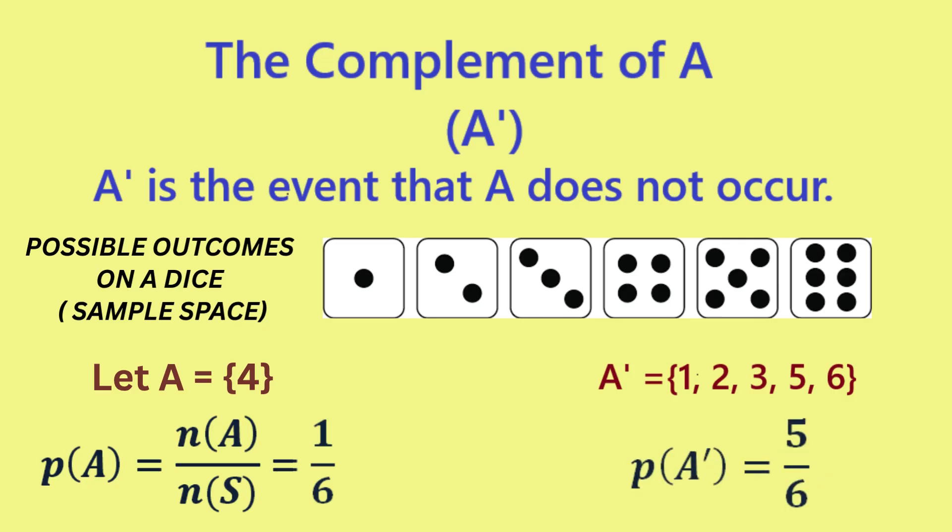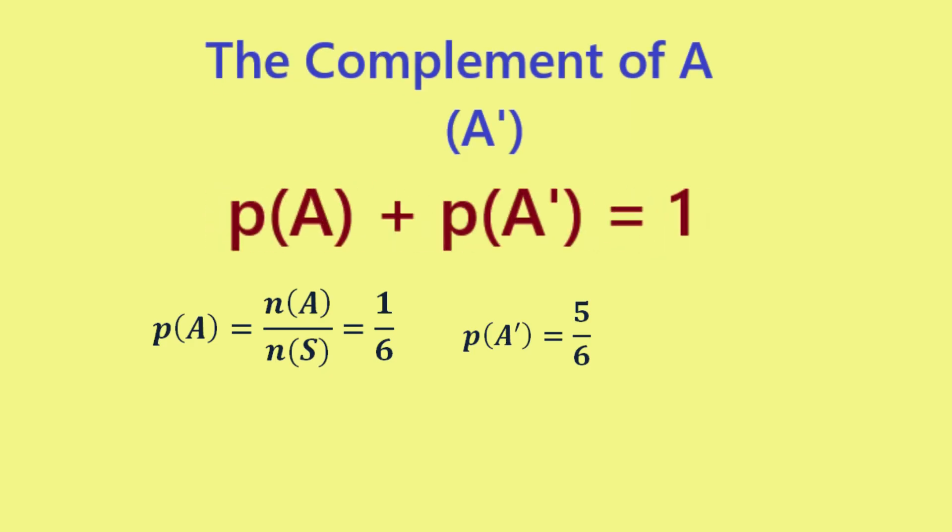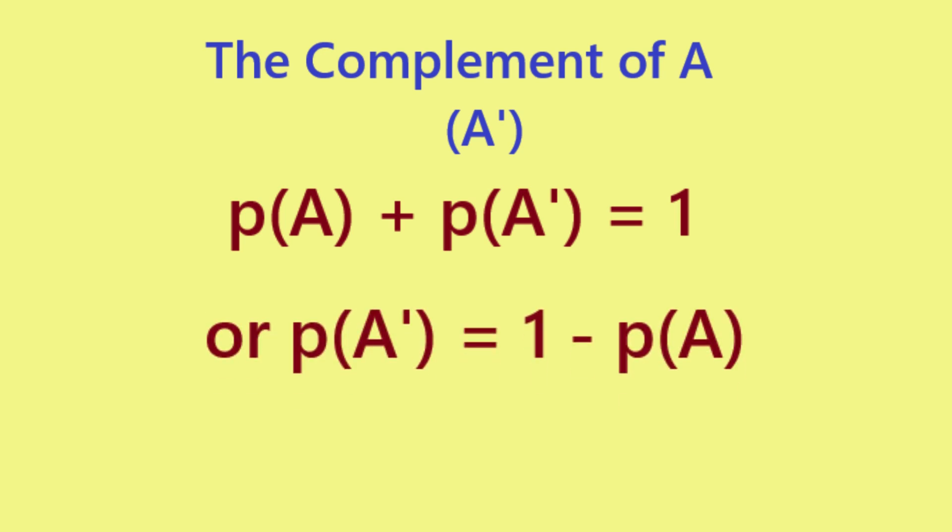since there are 5 numbers that aren't 4 from a total of 6. Notice that the sum of the probabilities of A and A complement is 1. This rule can also be rearranged to be expressed as the probability of A complement is equal to 1 minus probability of A.